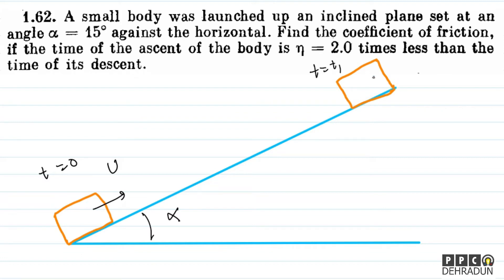So basically this means: if the body goes up and comes back, on the downward journey it takes T2 time. The ascent time is T1 and the descent time is T2.